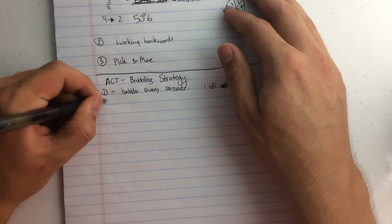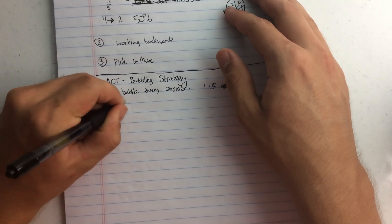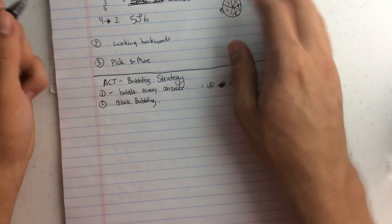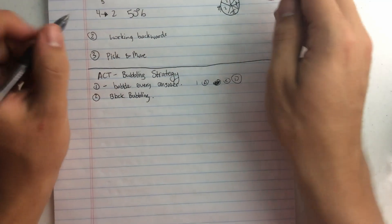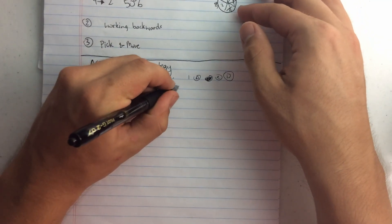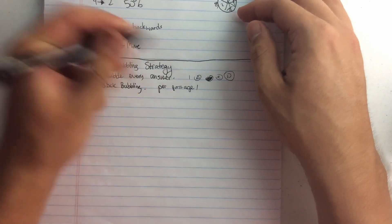And then the second way I'm going to call block bubbling. You can do this in a couple ways. Some people might want to do it per passage or per page.